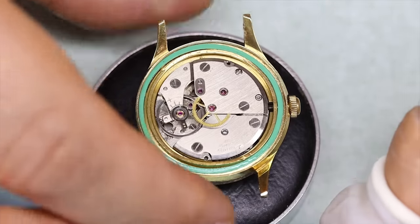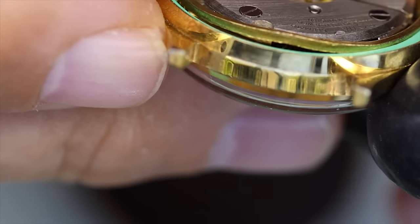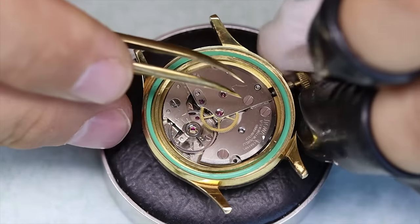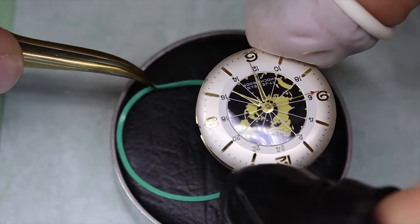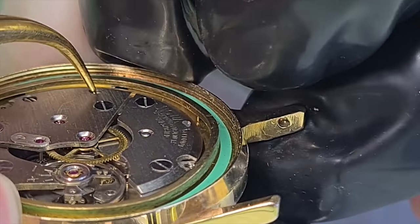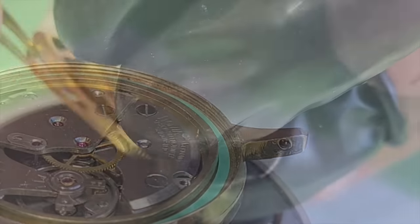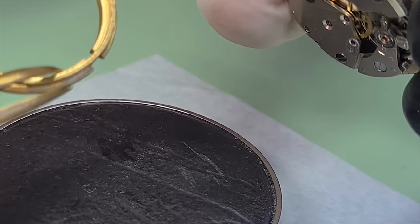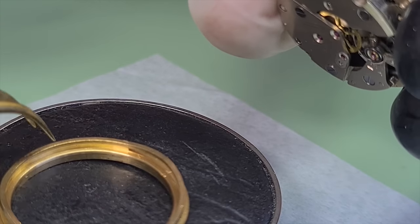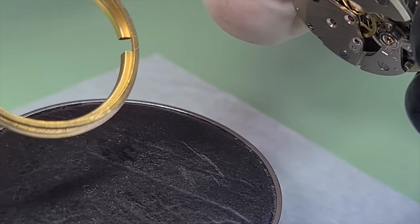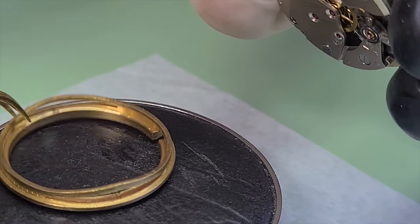When we get the watch open we see the movement and it has this peculiar spacer ring. I'm going to look a little bit closer at that. So on the spacer ring you can see there are two slits and they are bent up to provide a springing effect, but not very common to see.